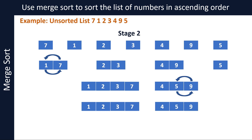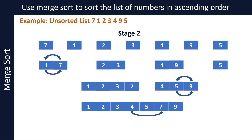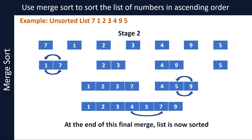Let's merge these two together to form the final sorted list. While doing that, the algorithm will rearrange numbers so that seven is between five and nine, as that is the correct sort order, as you can see on the screen. At the end of this final merge, our list is now sorted. I hope you now understand how the merge sort algorithm works.